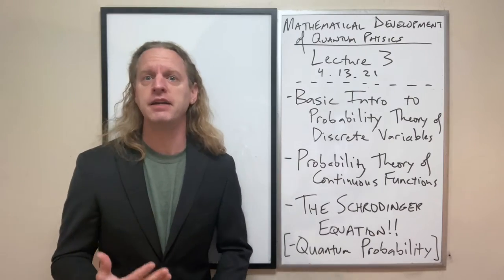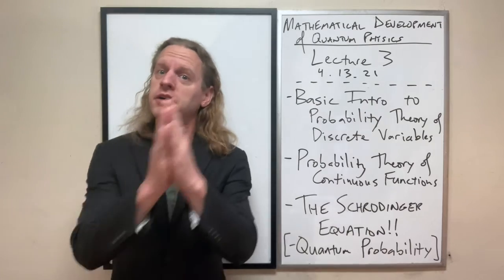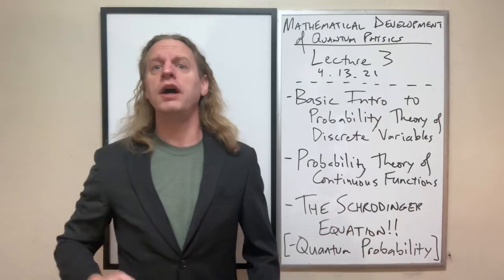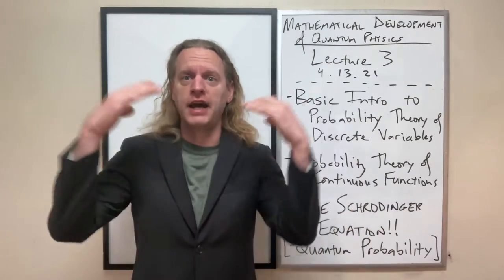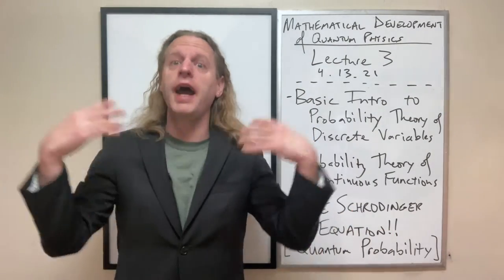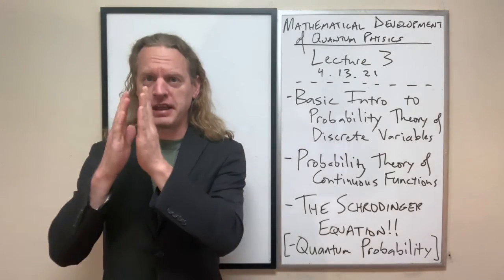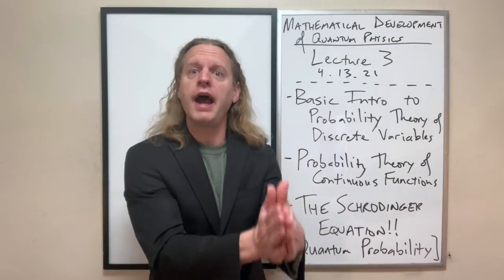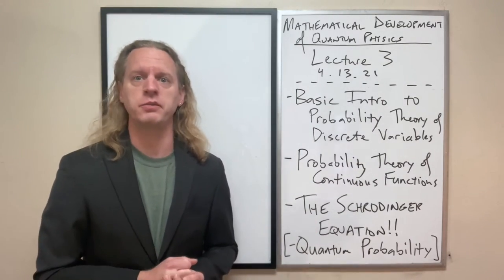So we're going to discuss the probability of discrete variables and discrete functions. And by that I mean, for example, functions that are basically quantized functions where you can take on certain values just kind of like how the hydrogen atom, the electron can take on certain energy levels. So we'll describe the probability of measuring these discrete outcomes and that will directly translate eventually to what we see in specifically quantum systems.